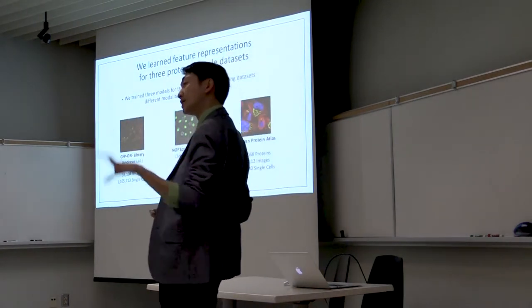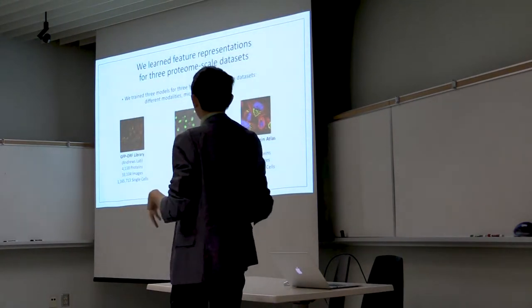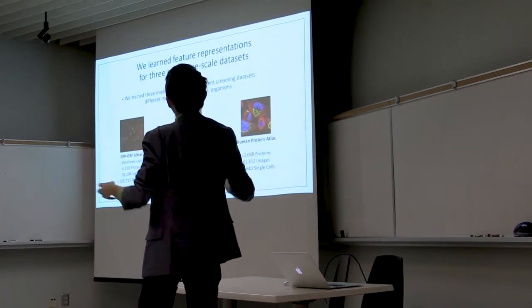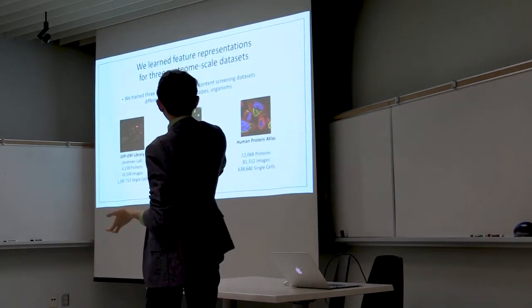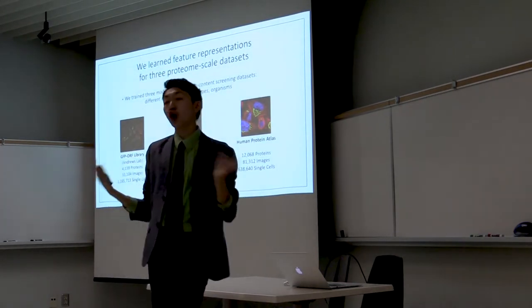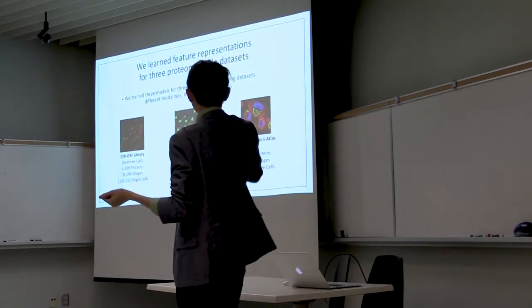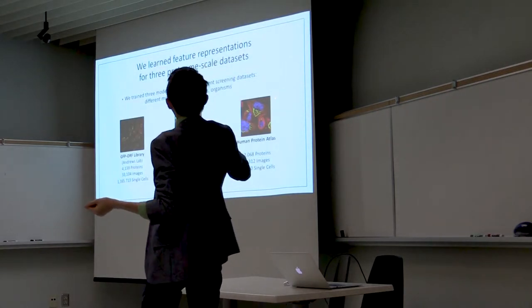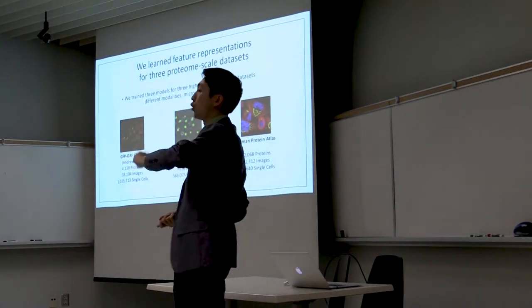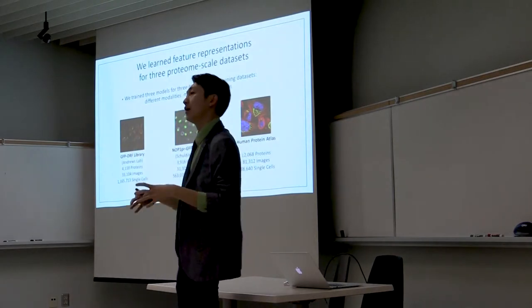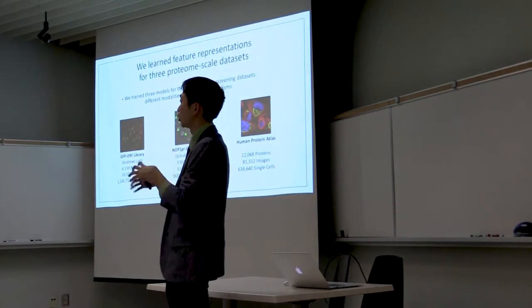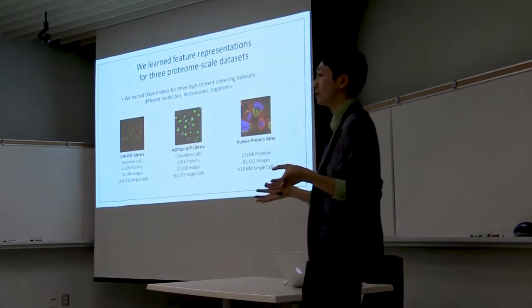So that was the concept and the implementation. Now I want to talk a little bit about the results. We learned feature representations on three genome-wide-scale datasets. You can see these are images of different modalities. We've got two fluorescent images here and one bright field image. They're obviously taken under different microscopes, contributed by different groups, and different organisms as well. You've got two datasets of yeast cells and then one dataset of human cells. My goal is to convince you that the method that we've developed can learn single cell representations from all three datasets, despite the fact that they're all very different.